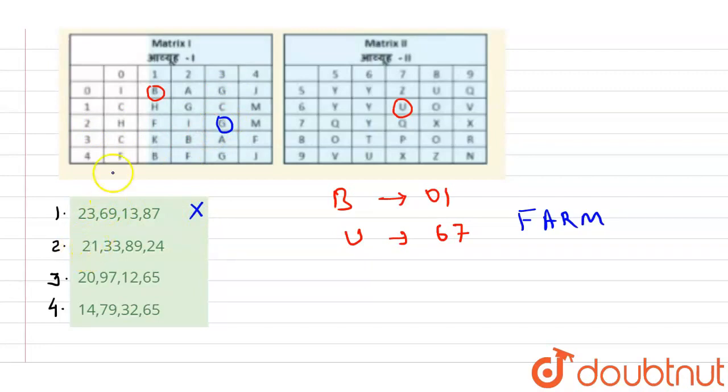Next, the first letter is 21, so second row and first column, that is F. Then 33, third row and third column, that is A. Then 89, eighth row and ninth column, that is R. And 24, second row and fourth column, that is M.